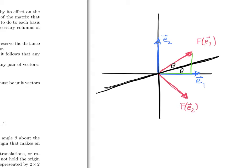Because this is an isometry, the reflected basis vector still has length 1. With an angle of 2 theta in our right triangle, the horizontal component is cosine 2 theta, and the vertical component is sine 2 theta. That will be the first column of our reflection matrix.